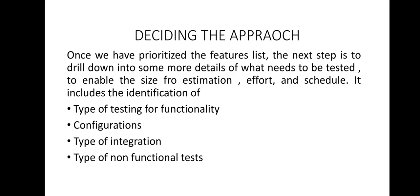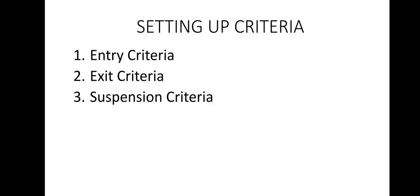The next step is setting up criteria. When talking about project development or testing, we discuss three kinds of criteria: entry criteria, exit criteria, and suspension criteria. These test strategies for various features and combinations determine how those features would be tested. Ideally, tests must be run as early as possible so that last-minute pressure of running tests at the end of development can be minimized.